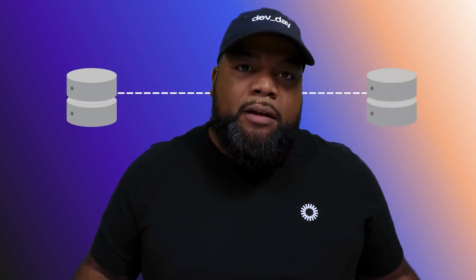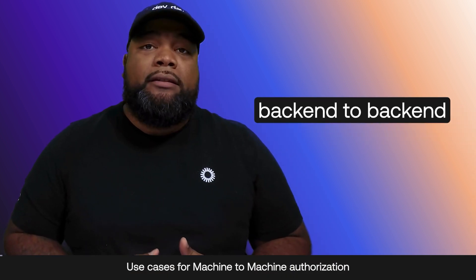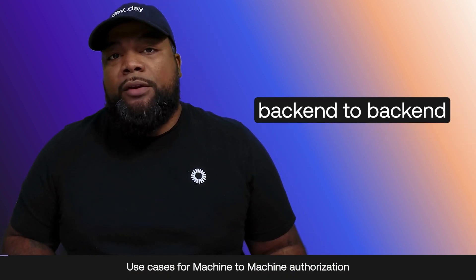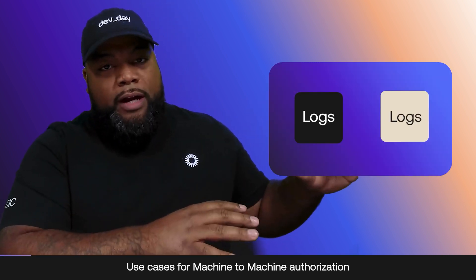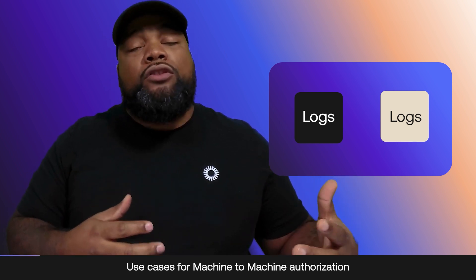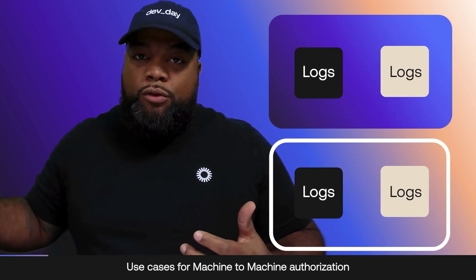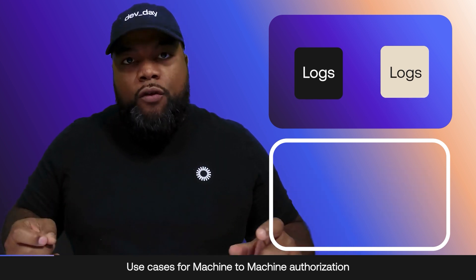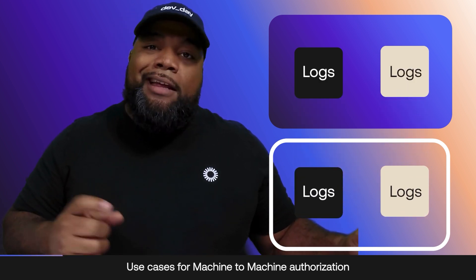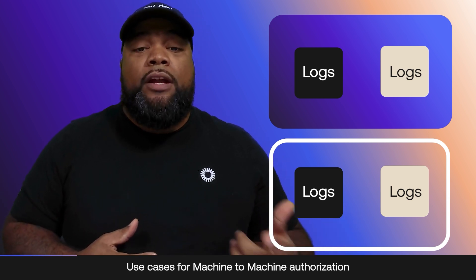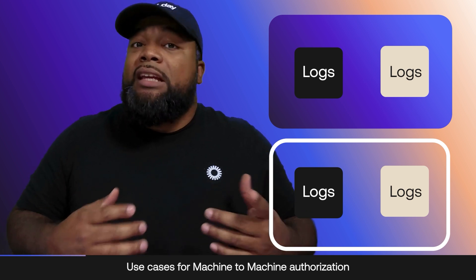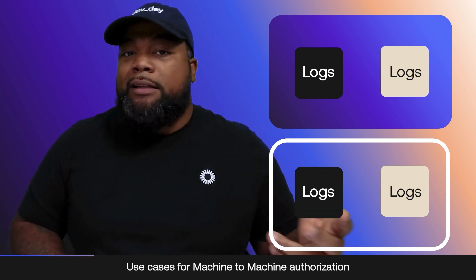Let's take a look at some common scenarios where machine-to-machine communications might make sense. First, let's talk about backend to backend — one of the most common scenarios. Say you have two different internal services that produce data in the form of logs, stored locally in your own warehouse. As part of your policies, you also want those logs stored off-site in a cloud storage solution. You send those logs over the internet to a cloud storage service in a different cloud provider. To authorize log storage from different services within your network, you use the client credentials grant, giving each client a client ID and a client secret.